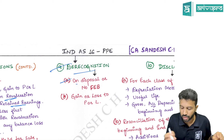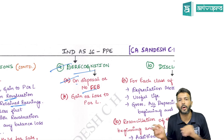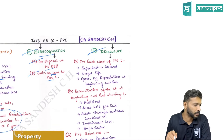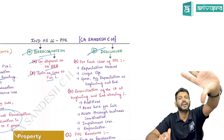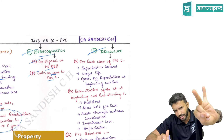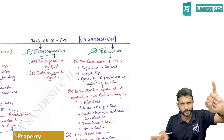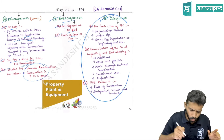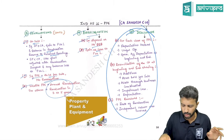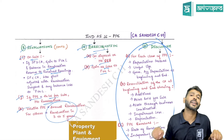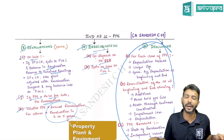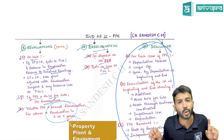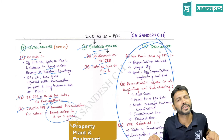PP is de-recognized on disposal or when future economic benefits cease. On de-recognition, any profit or loss goes to P&L. Key disclosures include: revaluation date, who performed the revaluation, assumptions used, gain or loss recognized, depreciation method selected, estimated useful life, and impairment losses recognized or reversed. This concludes the quick recap of IND AS 16 — originally a three-and-a-half day topic revised in about 20 minutes using the chart book.